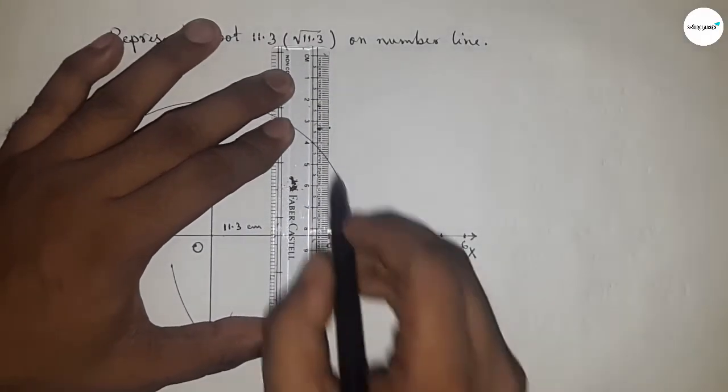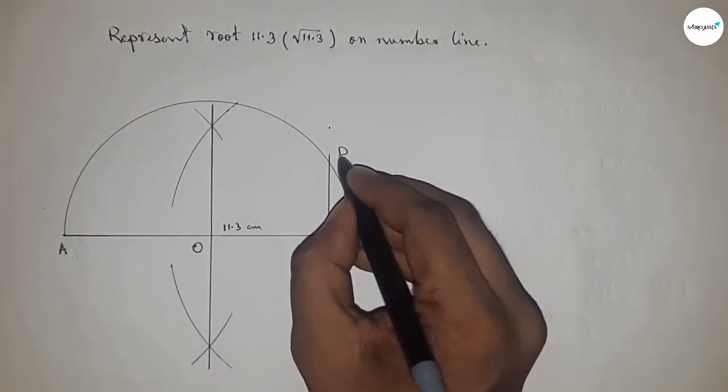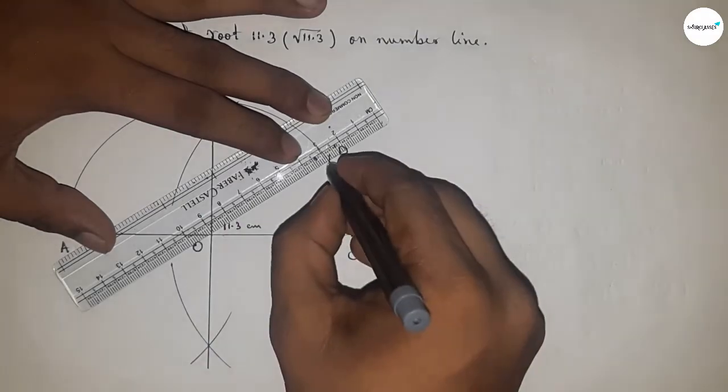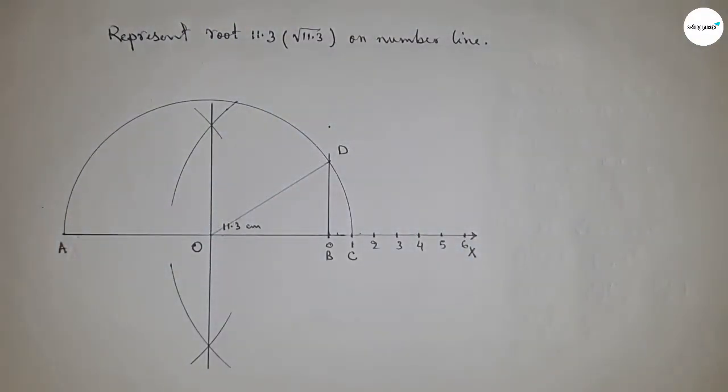Joining this to get the perpendicular line which meets at a point D. Now joining O and D.